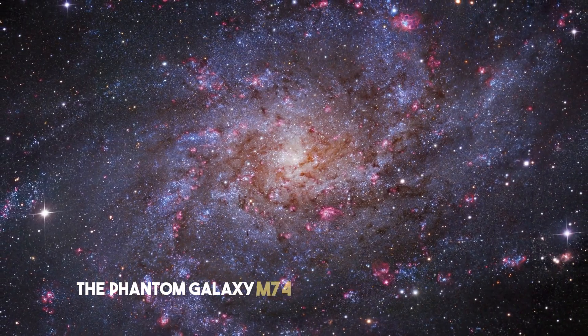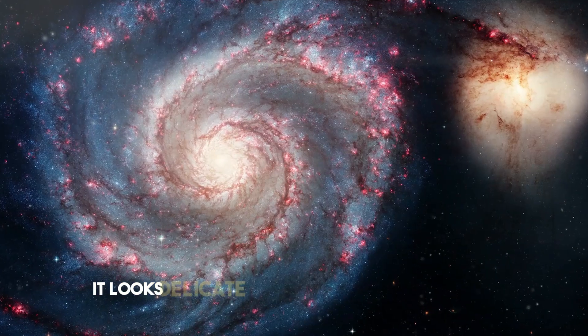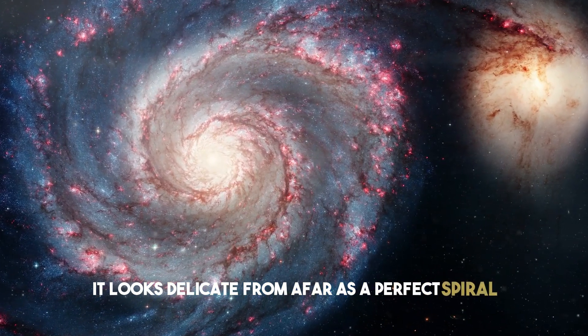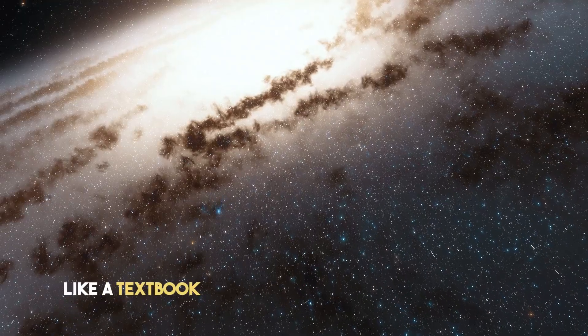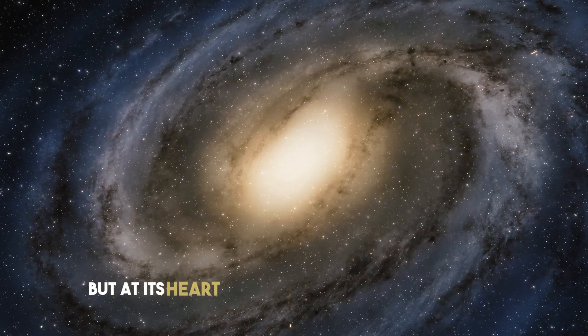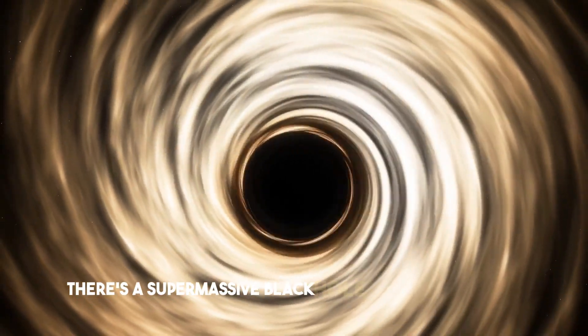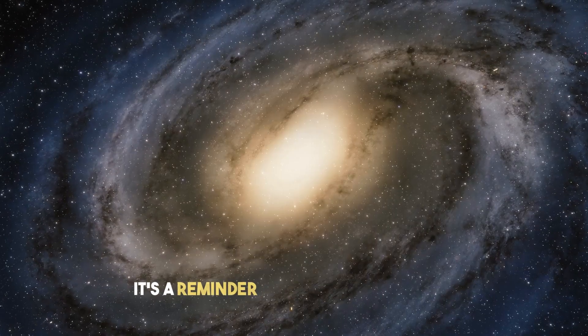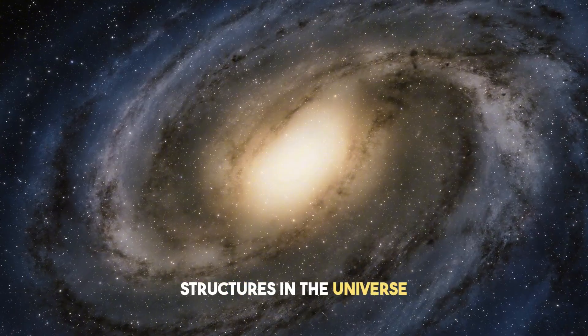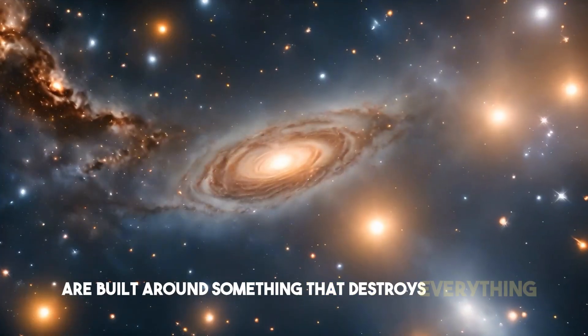The phantom galaxy M74 is the one you just heard. It looks delicate from afar. It's a perfect spiral, almost too clean, like a textbook drawing of what a galaxy should be. But at its heart, like nearly every large galaxy, there's a supermassive black hole shaping the dance. It's a reminder that even the prettiest structures in the universe are built around something that destroys everything it touches.